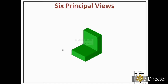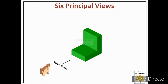For every object there are six principal views. When an observer looks at the object from a particular side, the observer fixes that side as the front side of the object, and based on that assumption, the other five views of the object are made. One object is shown and the observer is looking from this side, having assumed it as the front side.